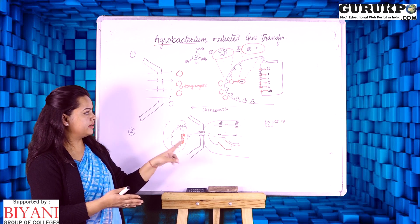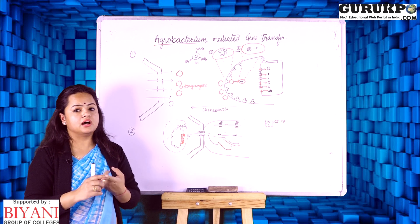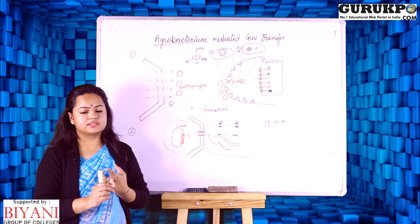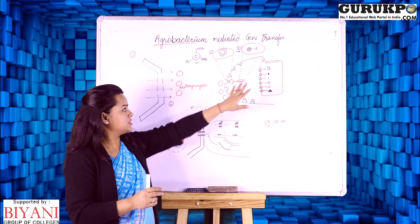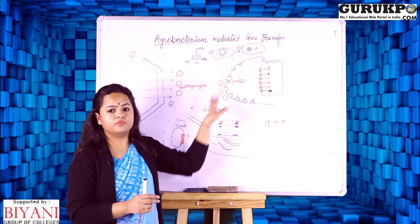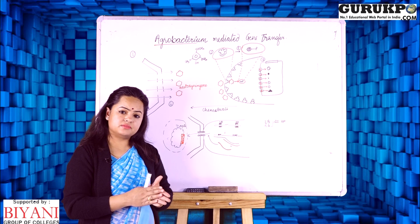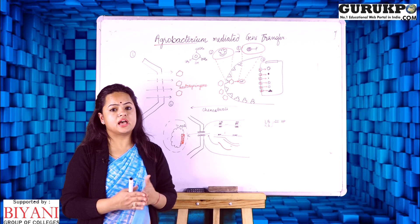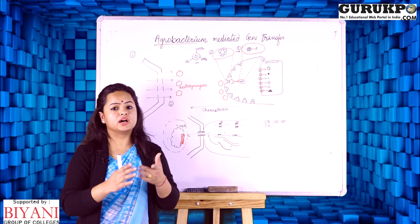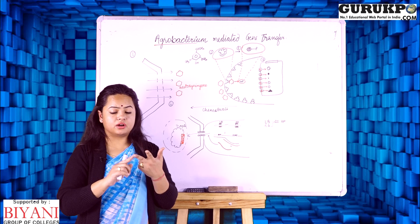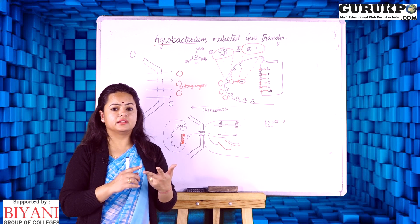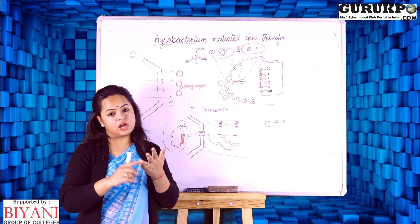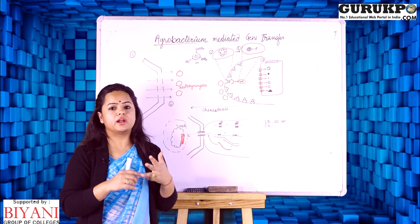In our laboratory we have created two types of vectors, that is a binary vector and another is a co-integrated vector, using the bacterial DNA of Agrobacterium. This vector will help us to design a new plant which is having a special quality of the seed protein, good quality of seeds, and a plant that will have a shorter height and require less water.